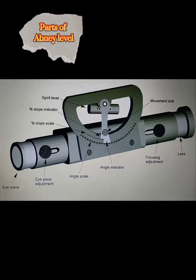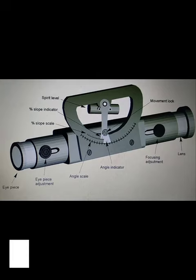Here you can see the parts of the Abney level. In most Abney style levels, the eyepiece is adjusted by sliding it forward or backward to focus the bubble image, the level line, and the stadia lines.